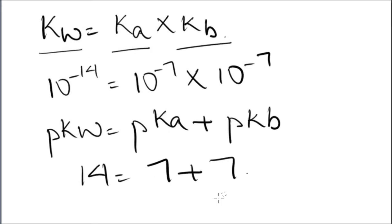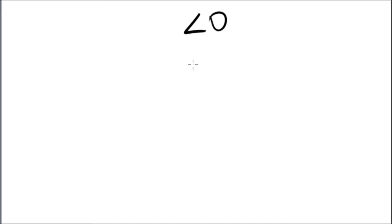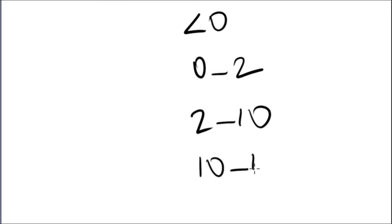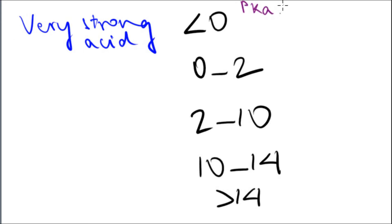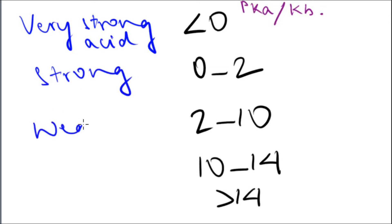We have a scale depending on the pKa or pKb: less than 0 is very strong, 0 to 2 is strong, 2 to 10 is weak, 10 to 14 is very weak, and greater than 14 is extremely weak.